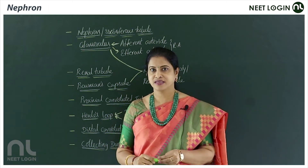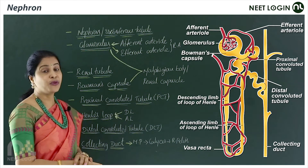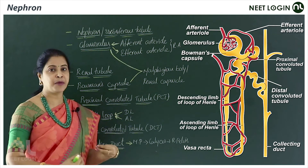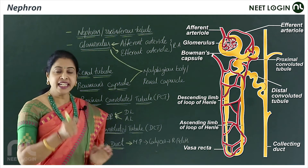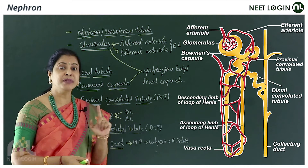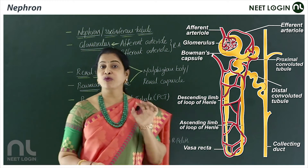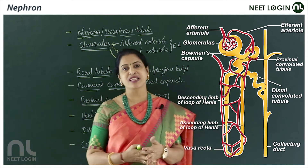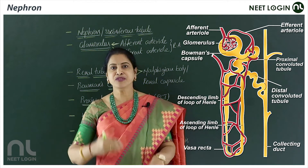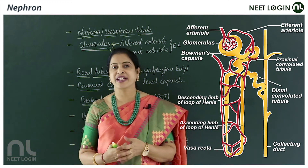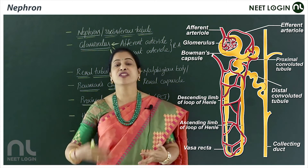Now let's discuss the nephron — the functional unit of the kidney where filtration of blood occurs to form urine. Each kidney contains around 1 million nephrons. However, this number doesn't remain constant throughout life. After 40 years of age, every 10 years, 10 percent of the nephrons are destroyed.